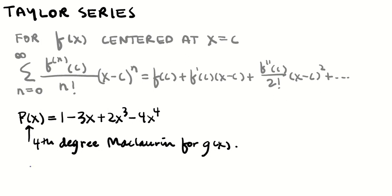We could ask: what's the value of g''(0)? Just knowing from looking at the polynomial, it's going to be 0 because there's no x² term. So g''(0) = 0.